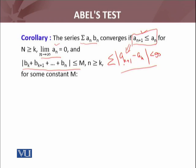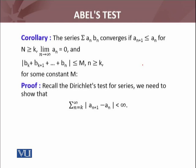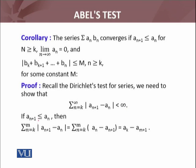Abel's test proves the same thing, showing that if this condition is satisfied then the series is convergent. Kyunki Abel's test ko proof karne ke liye hum Dirichlet test ko hi use karenge, aur main sirf show karunga ki yeh series converge karti hai. Recall that for the Dirichlet test for series, we need only to show that this series is convergent. Ab is series ko convergent karne ke liye: if A_{n+1} ≤ A_n, isi ko main consider karta hoon.